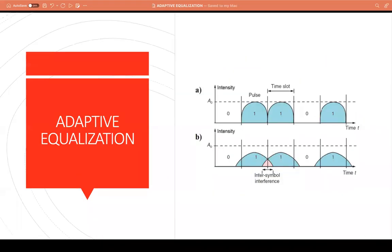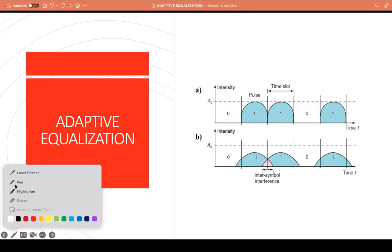We already know what is inter-symbol interference. In this picture we can see that there are different pulses which are being transmitted from the transmitter. These pulses by the time they reach the receiver get distorted and they also overlap.